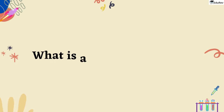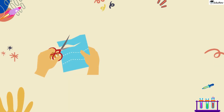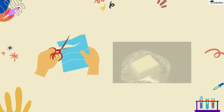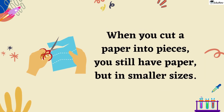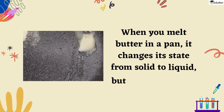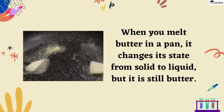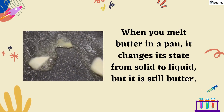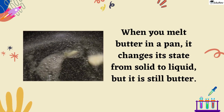Let's first understand what is a physical change. Imagine cutting a paper into pieces or melting butter in a pan. When you cut a paper into pieces, you still have paper, but in smaller sizes. Similarly, when you melt butter in a pan, it changes its state from solid to liquid, but it is still butter. These are some examples of physical changes that you might have experienced in your daily life.